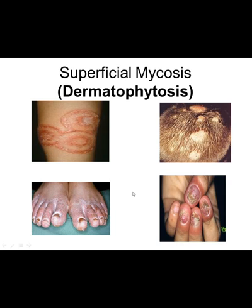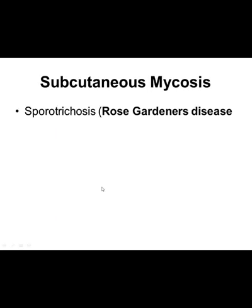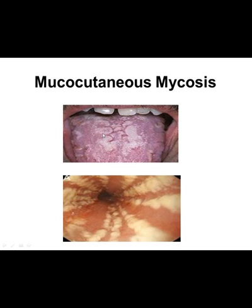The next type of fungal infection is mucocutaneous mycosis, which involves infection of the oral cavity. This diagram is showing oral thrush, and the fungal infection is candidiasis — mainly esophageal candidiasis.